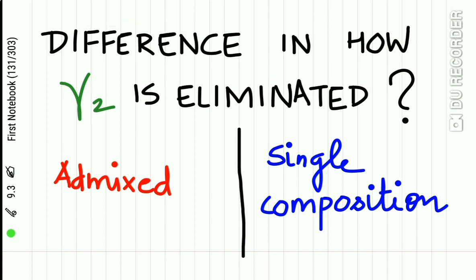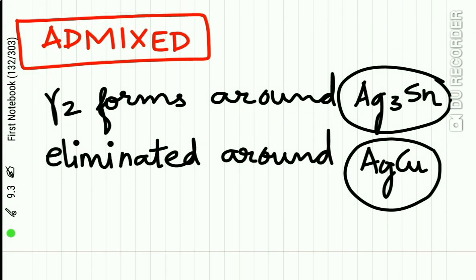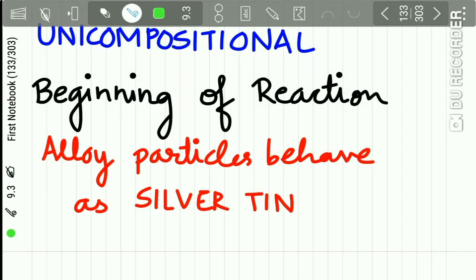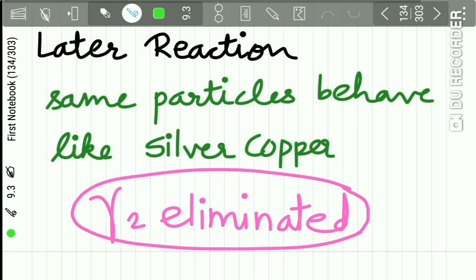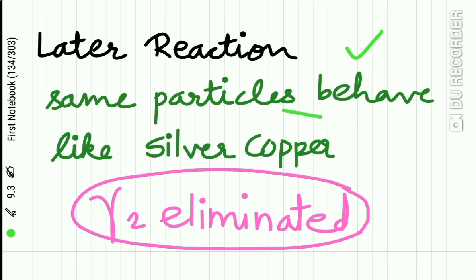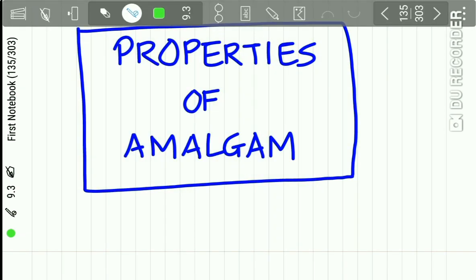In single composition alloy particles, the gamma 2 phase is also eliminated, but there is a difference in how it is eliminated compared to admixed alloys. In admixed alloys, the gamma 2 phase forms around the Ag3Sn phase and is eliminated around the silver-copper phase. While in single composition alloys, at the beginning of the reaction the particles behave as silver-tin particles, while in the later reaction the same particles behave as silver-copper particles, and the gamma 2 phase is eliminated.